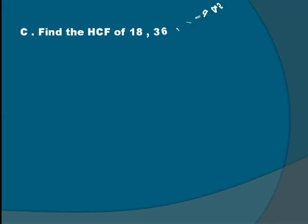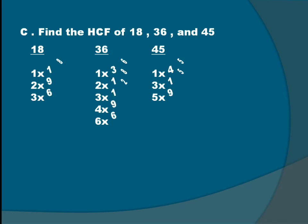C. Find the HCF of 18, 36, and 45. 18: 1×18, 2×9, 3×6. 36: 1×36, 2×18, 3×12, 4×9, and 6×6. 45: 1×45, 3×15, and 5×9.